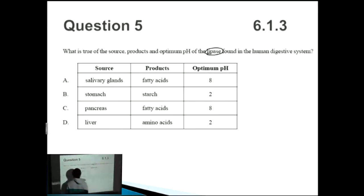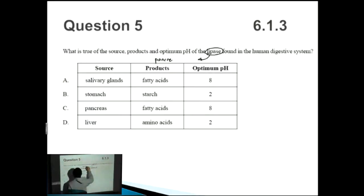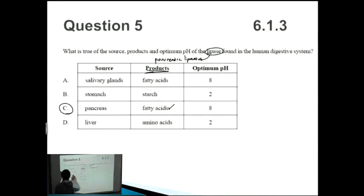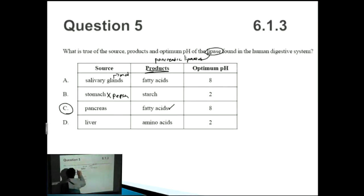Question five: what is true of the source, products, and optimum pH of lipase in the human digestive system? Remember, lipase is also called pancreatic lipase, so its source is the pancreas — that gives us answer C. The products this time are fatty acids, and the optimum pH is around 8. The stomach is the source of pepsin, the salivary glands are the source of maltase which breaks down maltose, and the liver releases other enzymes not mentioned here.